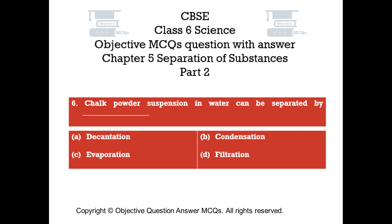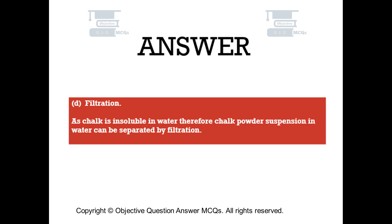Question number 6. Chalk powder suspension in water can be separated by: Option A, Decantation. Option B, Condensation. Option C, Evaporation. Option D, Filtration. The right answer is Option D — Filtration. As chalk is insoluble in water, chalk powder suspension in water can be separated by filtration.